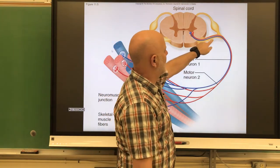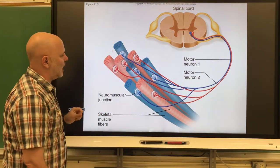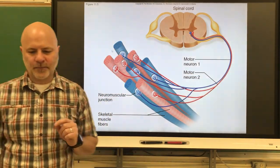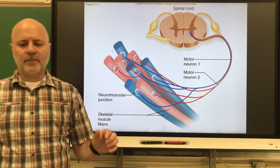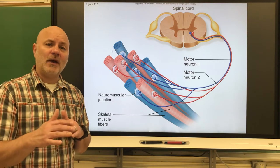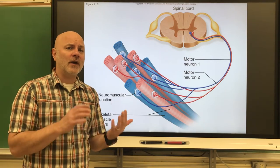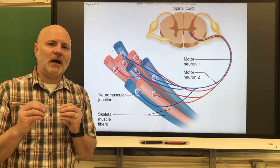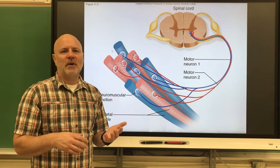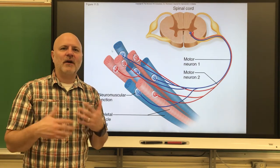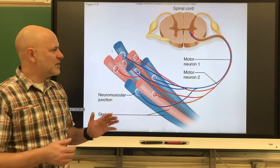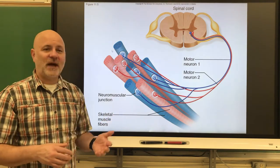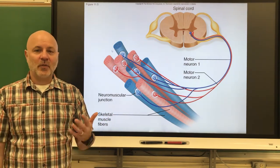Here, one motor unit is shown in blue, innervating all the blue muscle fibers, and another motor unit in red innervating all the red ones. These muscle fibers are typically dispersed throughout a muscle, not on one side or the other. If we stimulate one motor unit, we get a weak contraction; the more motor units involved, the stronger the contraction. The range is anywhere from three muscle fibers up to a thousand muscle fibers per motor neuron.